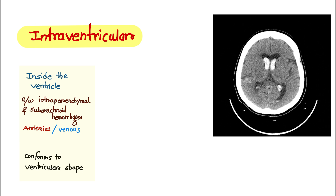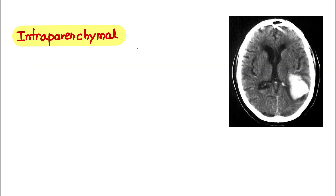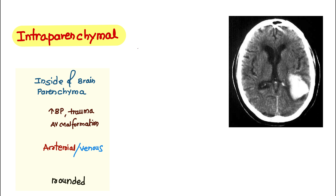Here we have intraparenchymal hemorrhage. It is inside the brain parenchyma and is due to mechanisms such as increased blood pressure. It can be caused by trauma or arteriovenous malformation. The source is the same as intraventricular hemorrhage — arterial or venous. The shape is rounded, and the symptoms are the same: sudden-onset nausea, headache, and vomiting.